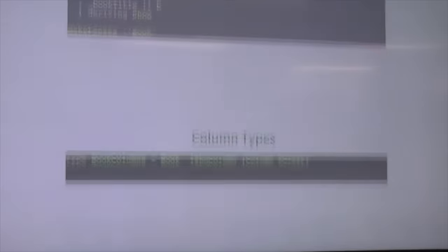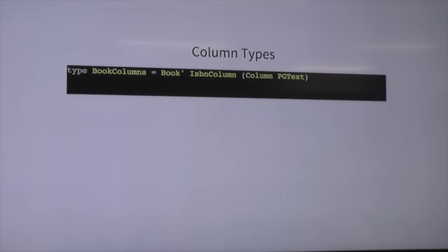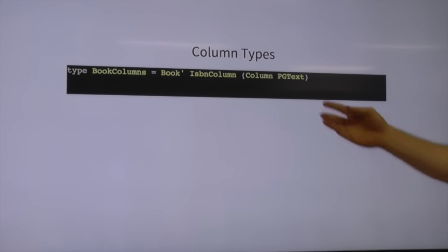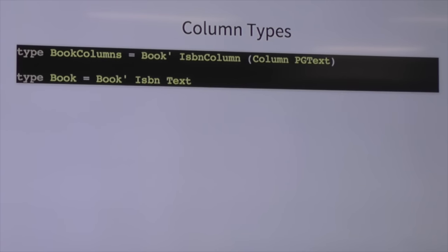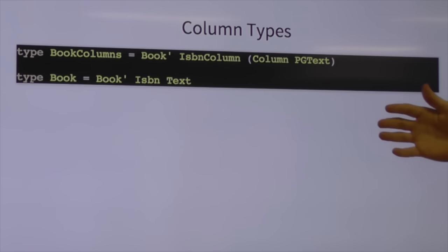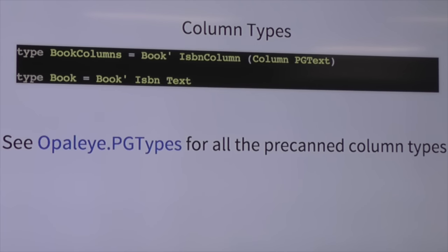Then we define the column types — talking about what we're expecting the type to be in the database. So here we're saying that the title is a column of `pgText`, and we have this ISBN column we'll dig into later. And then we define the types that we expect to get out in Haskell: the ISBN itself, because we've wrapped it up in a newtype to say it's a specific type of ID, and then the text.